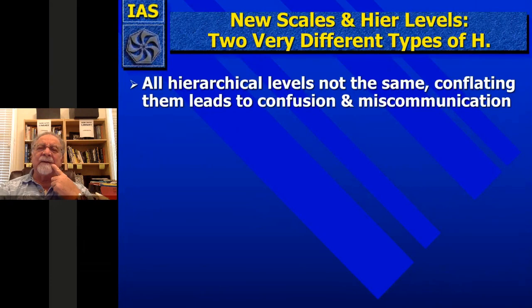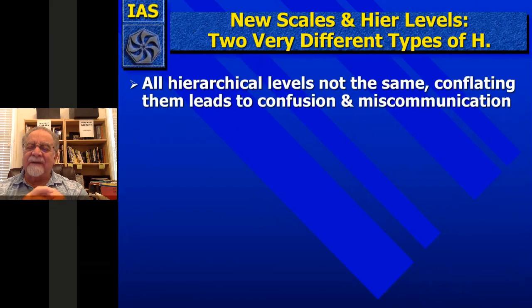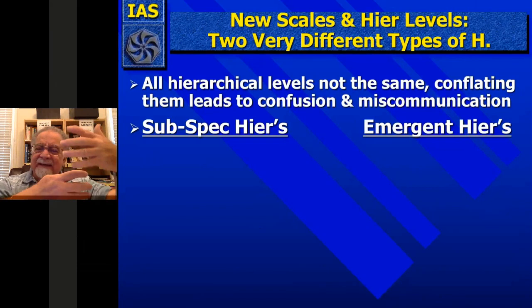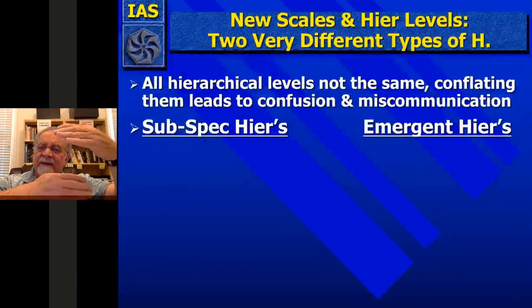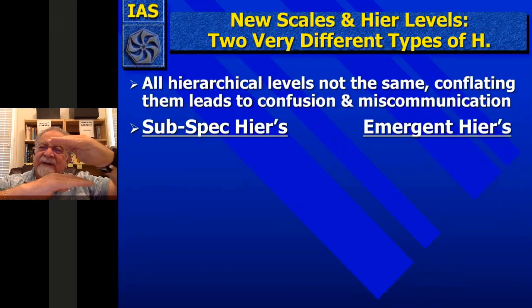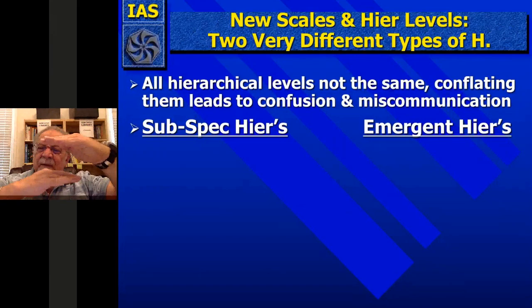So emergence is the appearance of a new scale of entity — going across a new gap and looking at the scales of things. All hierarchical levels are not the same. I distinguish between subspecialization hierarchies and emergent hierarchies. Subspecialization hierarchies involve a new scale on one side that's above and larger in size — once that appears, it can subspecialize. When we look for levels, we sometimes confuse all of these subspecialization fingers with the emergent levels, and you have to distinguish between them.